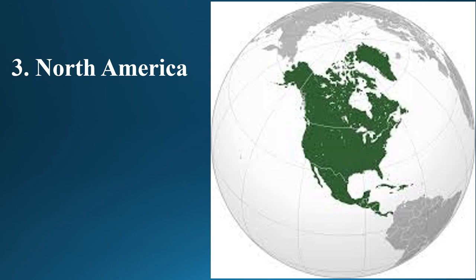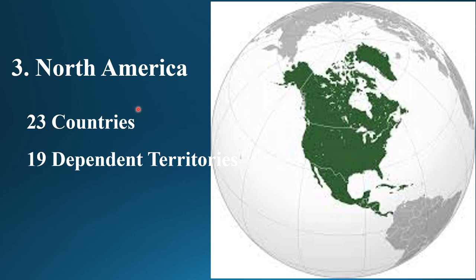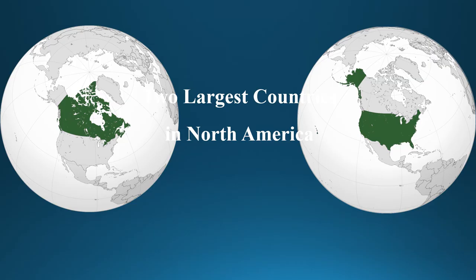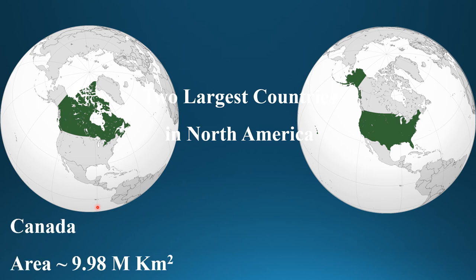North America is the third largest continent in the world. It has 23 countries and 19 dependent territories. The area of North America is about 24.7 million square kilometers. The two largest countries in North America are Canada and the United States of America. The area of Canada is 9.98 million square kilometers and the area of the United States is 9.52 million square kilometers.